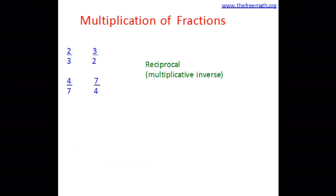This kind of fraction is called the reciprocal or multiplicative inverse of the first fraction. So 3 over 2 is a reciprocal of 2 over 3, and 4 over 7 is a reciprocal of 7 over 4. Now let's multiply these two pairs and see what happens. If I multiply 2 over 3 and 3 over 2, the product is 6 over 6, which equals 1. In the second case, 28 over 28 also equals 1.